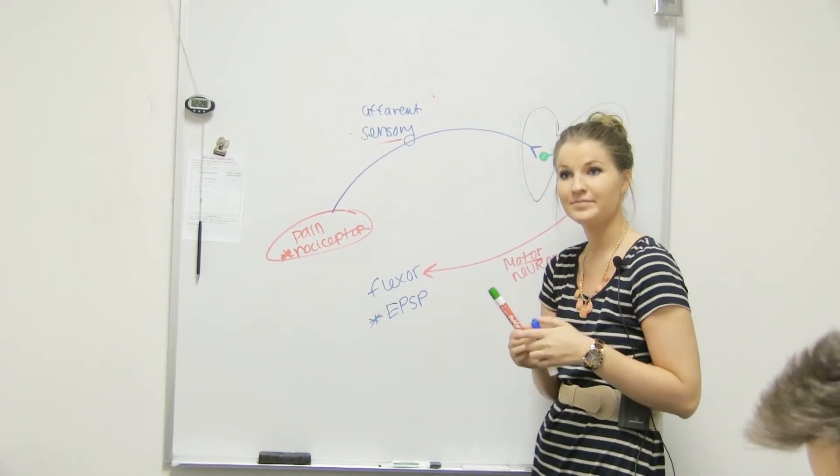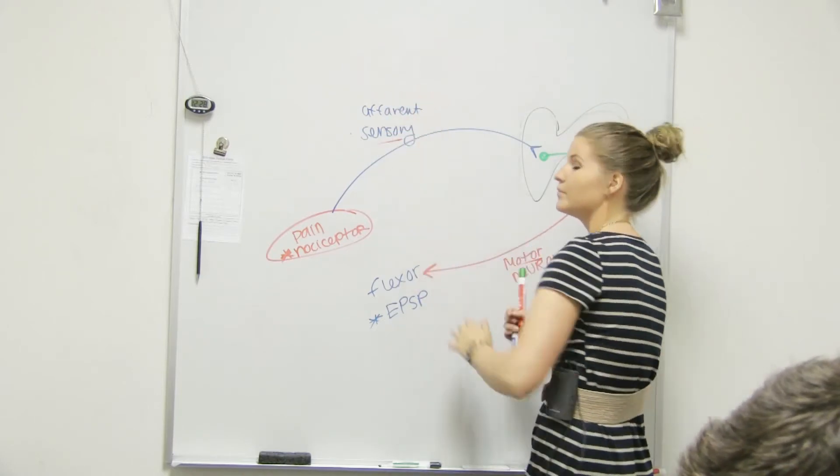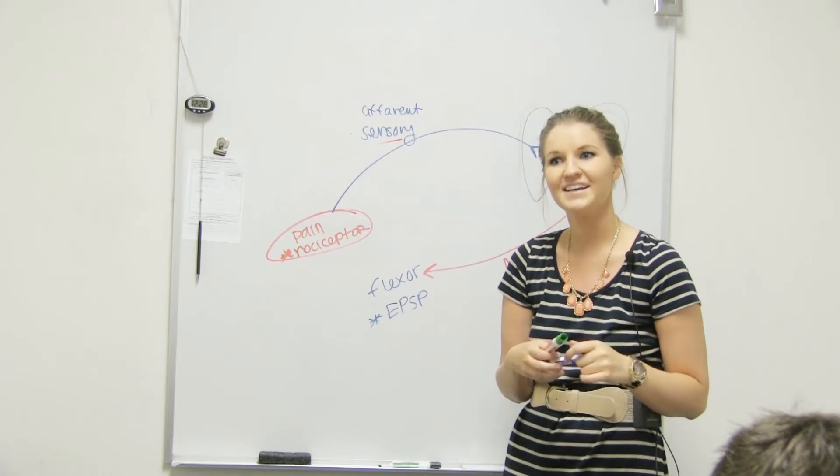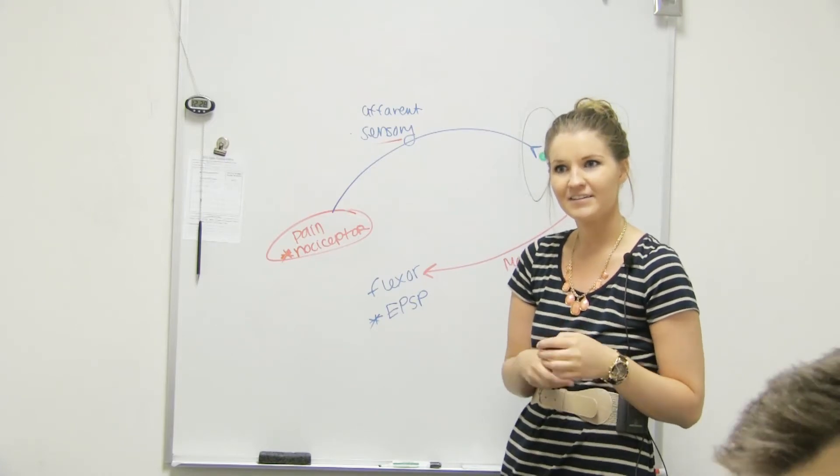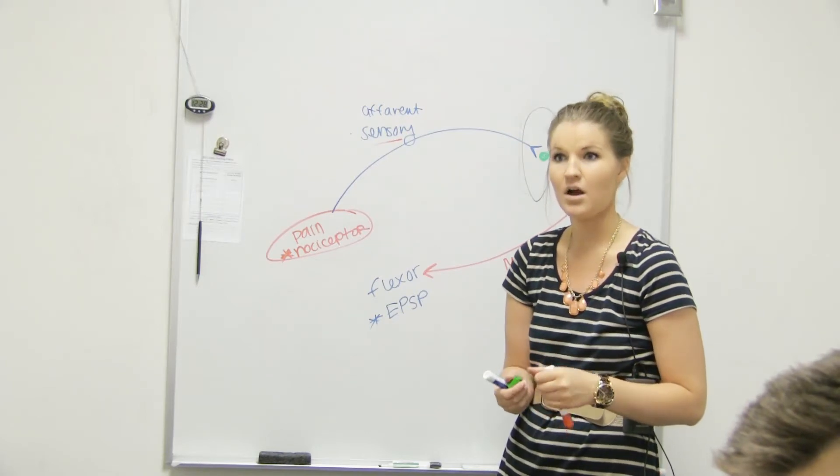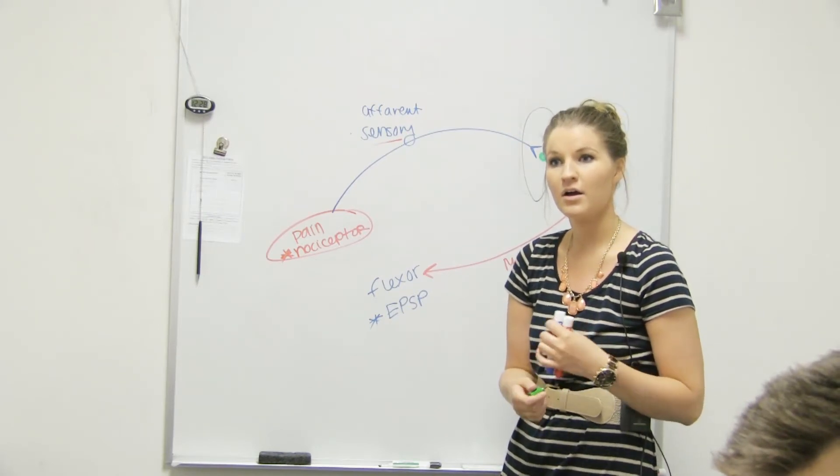I actually have a friend whose nociceptor on her hand doesn't work. Her hand is numb to pain. Did she get in an accident or something? No, she was born with the umbilical cord wrapped around her, and so it cut off part of her hand.